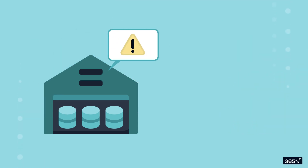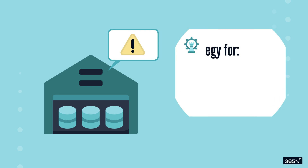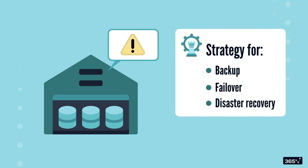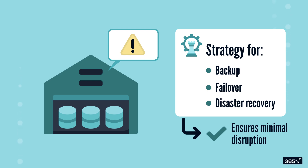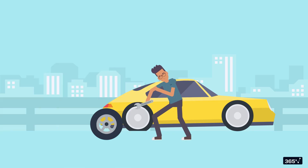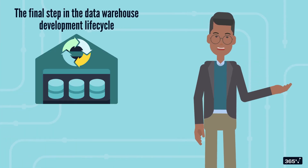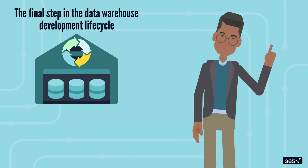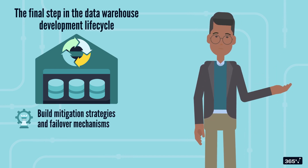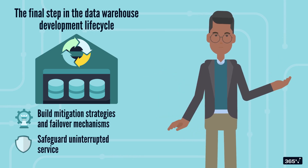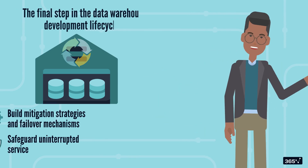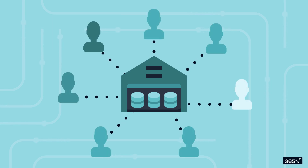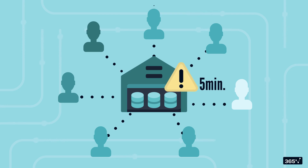No system is perfect and failures happen. Having a strategy for backup, failover, and disaster recovery ensures minimal disruption. Think of it as having a spare tire in your car — you hope you never need it, but it's a lifesaver when you do. This is the final step in the data warehouse development lifecycle, where we build mitigation strategies and failover mechanisms to safeguard uninterrupted service, even in case of failures. This is decisive because data warehouses serve millions of customers, and a few minutes of failure could cost billions.